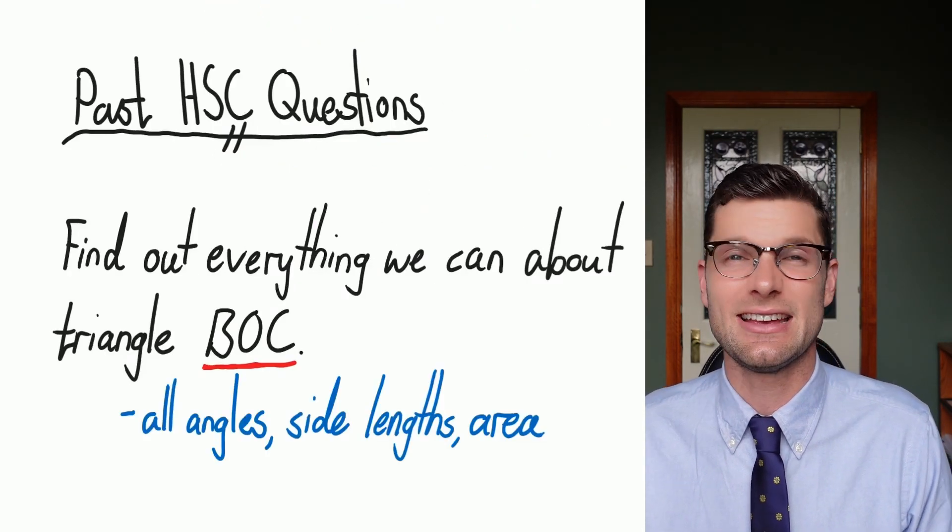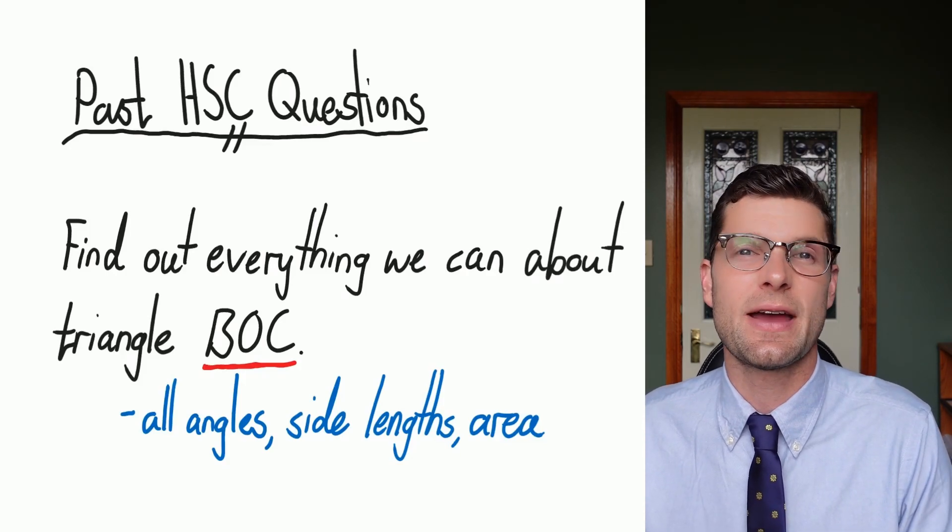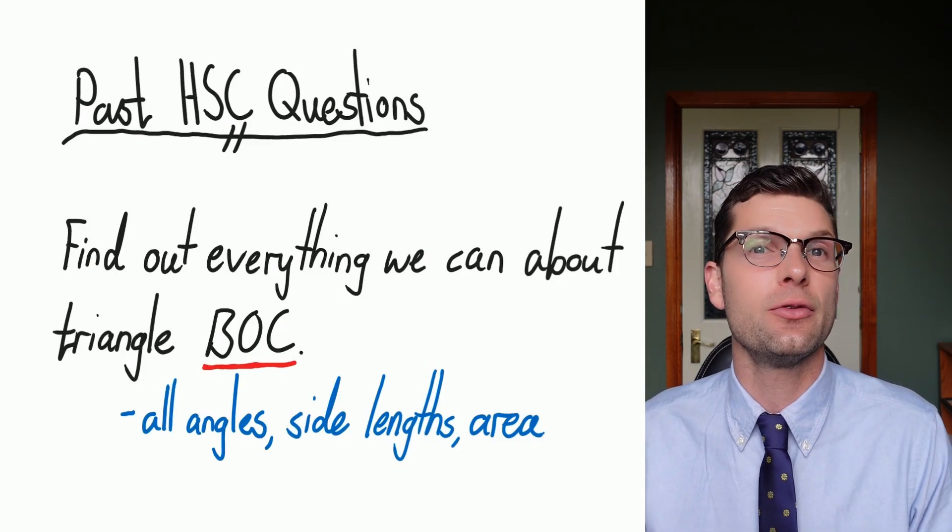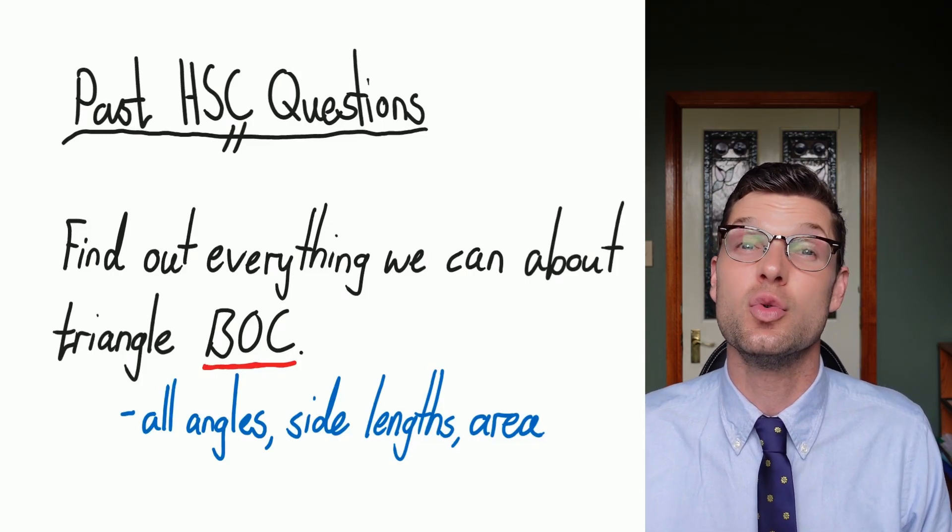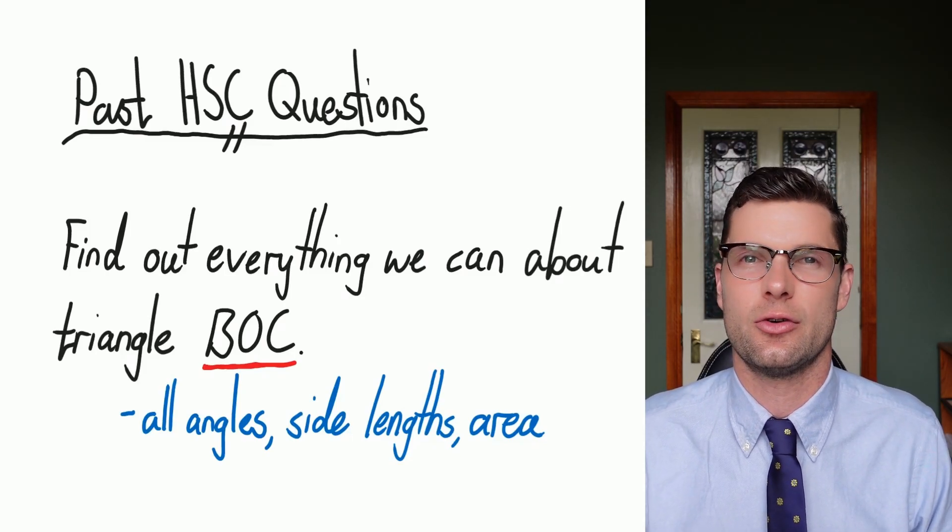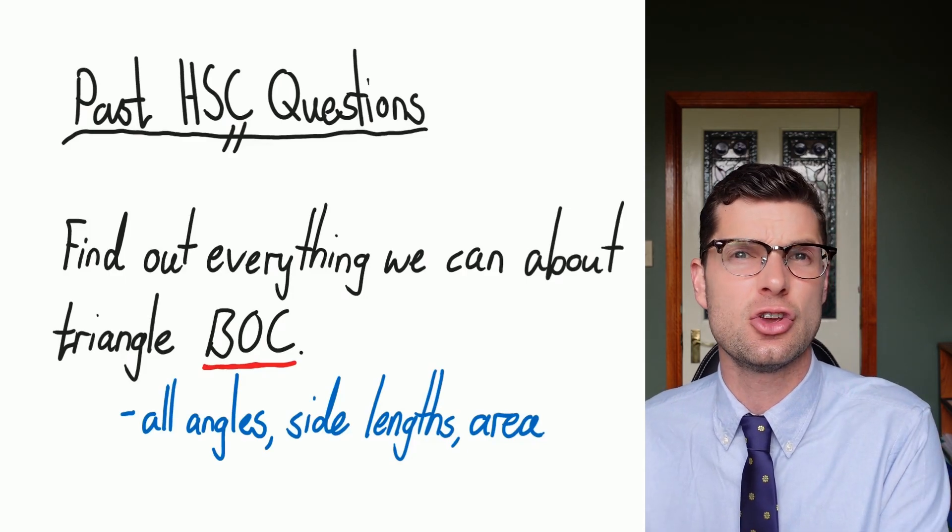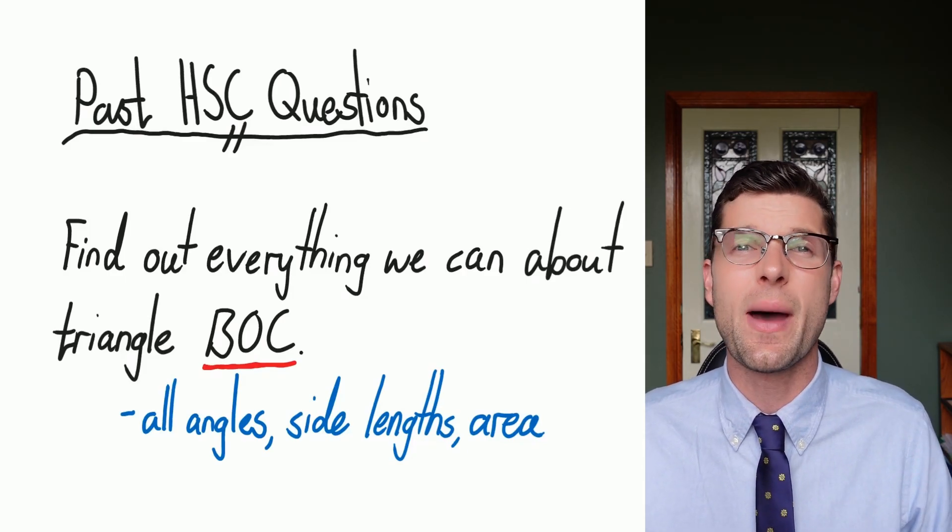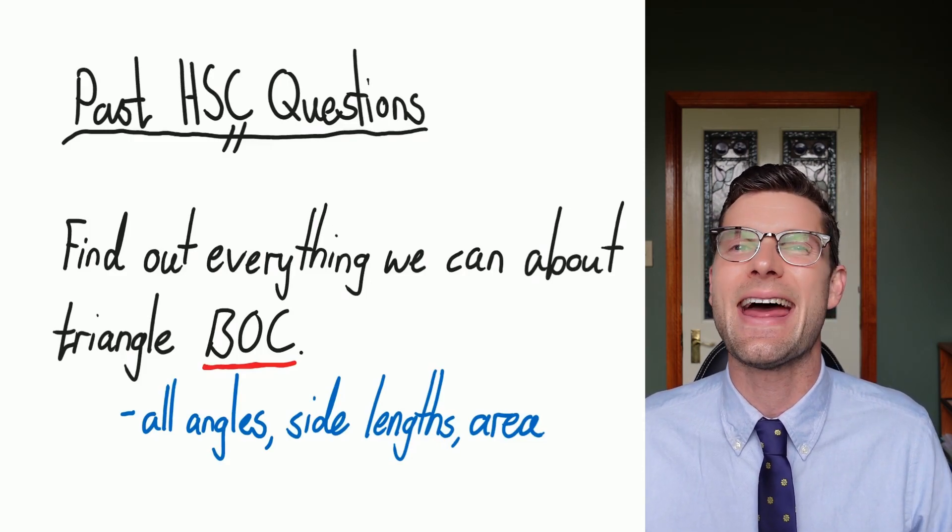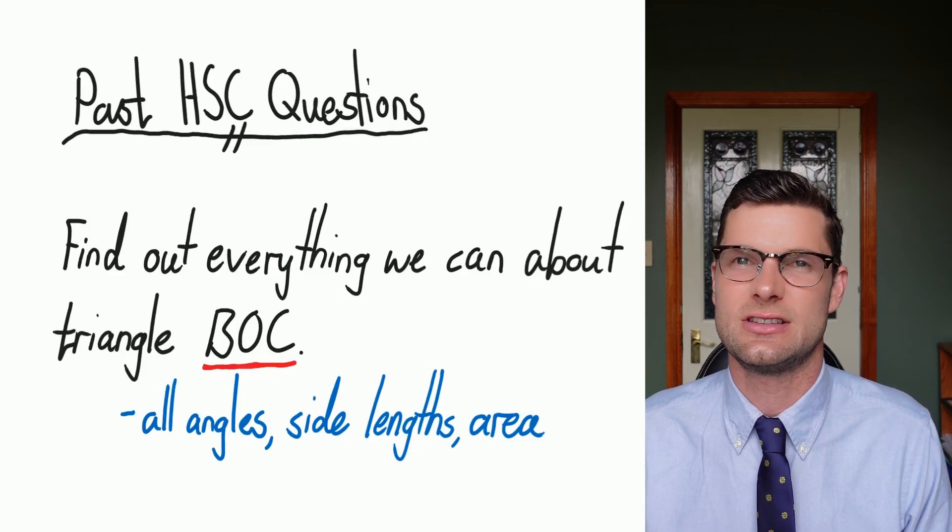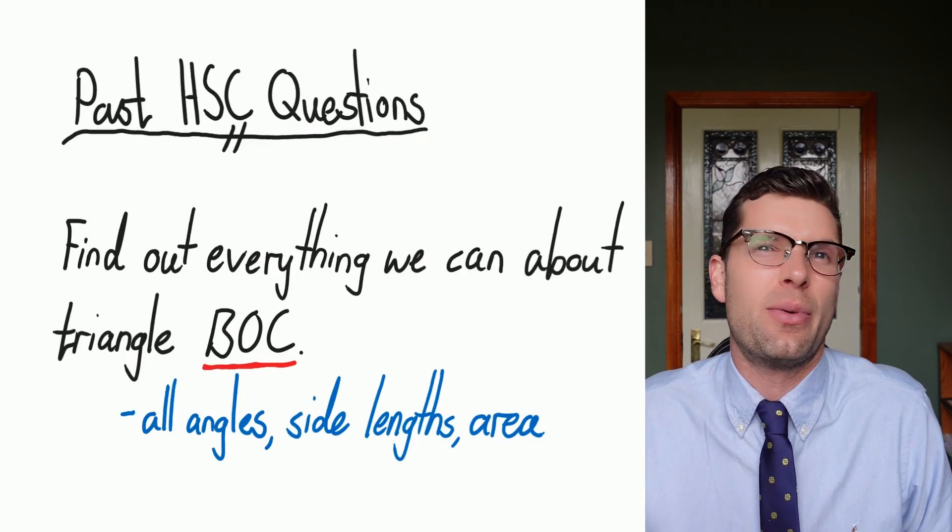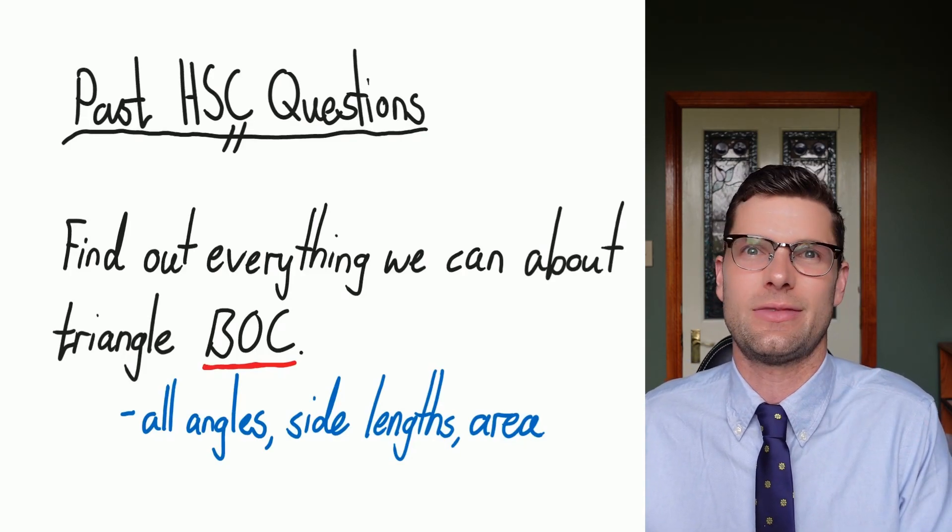In order to do this, we're going to look at some past HSC questions, just to make sure that we know what we're looking for in the questions and in the diagrams. For this first example, this survey or the diagram that I'm going to show you was actually in the HSC, but the question was about a different triangle that was made. So we're going to see that we can use these same principles, no matter what the question is. Our goal for this next example is just we want to find out absolutely everything about the triangle BOC. Usually a question is going to ask you to find something specific, but if we can find everything, that's even better.